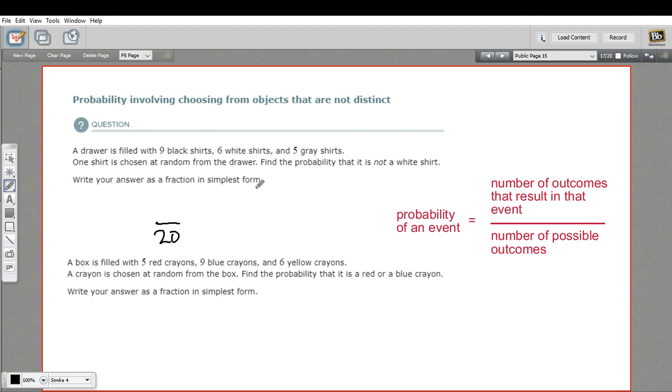Now, the probability that it's not a white shirt is the probability that it's either gray or black. So nine plus five is 14. So when you're picking a shirt out of this pile, you have 14 chances out of 20 to get a black or a gray, which is not a white shirt. So we would put 14 on top.